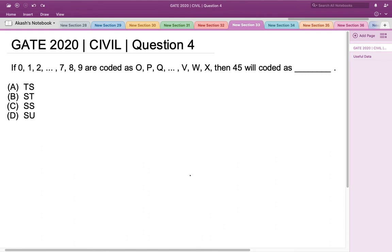Hello everyone, this is the question asked in GATE 2020 Civil Engineering Set 1. If 0, 1, 2, till 7, 8 and 9 are coded as O, P, Q, till V, W and X, then 45 will be coded as what?